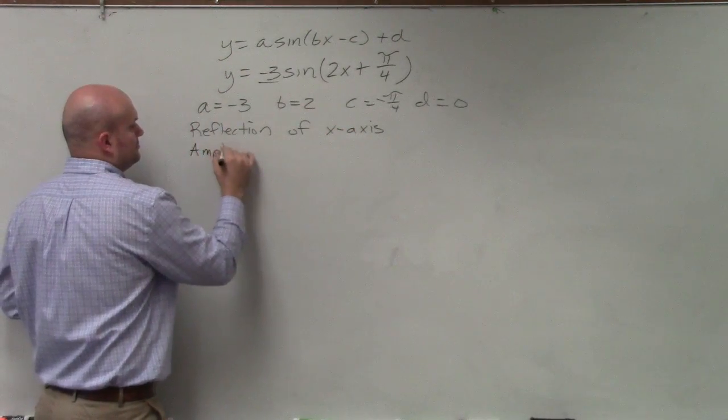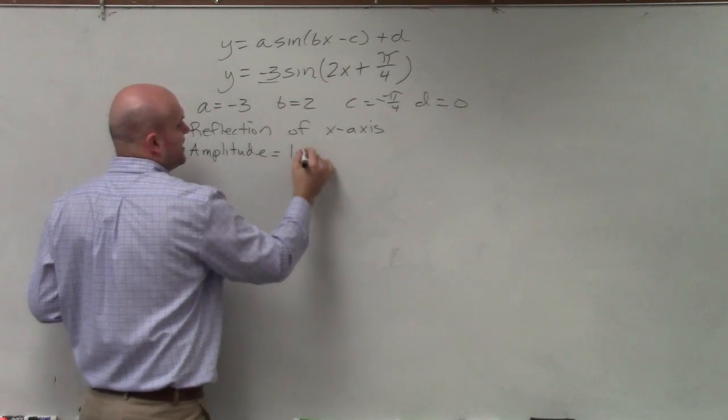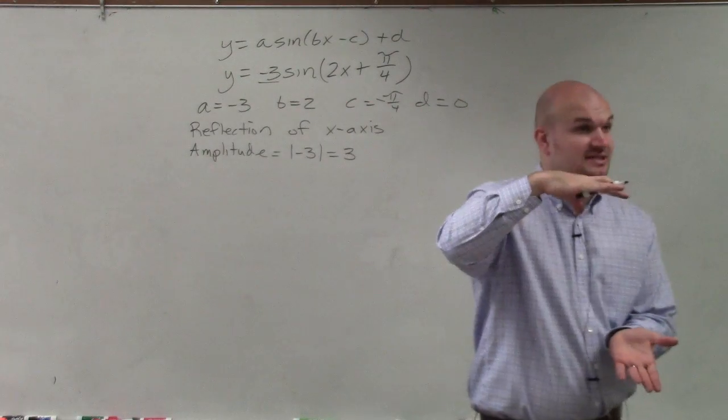The amplitude is going to be the absolute value of negative 3, which is equal to 3. Remember, that's the half distance, and these are all things you guys are going to need to know.